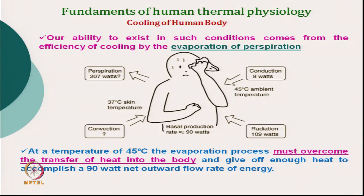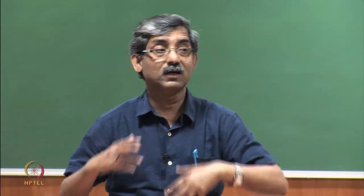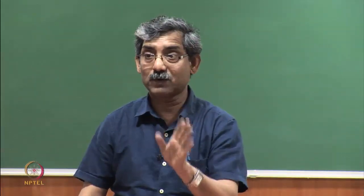At a temperature of 45 degree Celsius, the evaporation process must overcome all the heat we are receiving. Our body's skin temperature is 37 degree Celsius. The skin temperature would be expected to rise to 37 degree Celsius, at which point perspiration will initiate. As the temperature goes on increasing, perspiration will also increase to maintain skin temperature at 37 degree Celsius if possible. This is the physiological process which will always try to keep temperature at maximum 37 degree Celsius.